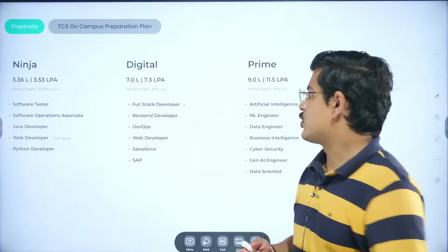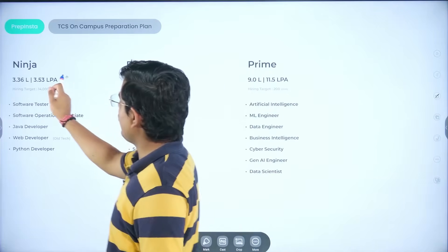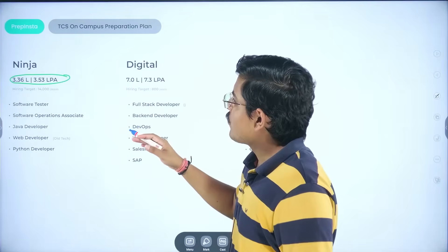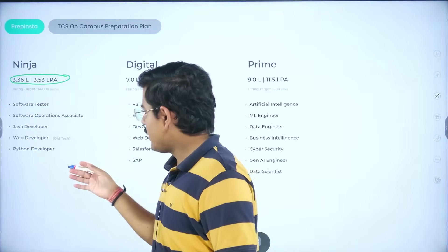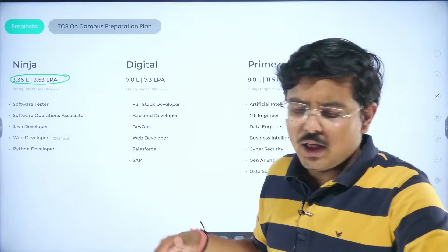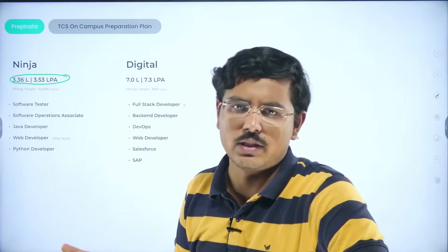TCS primarily hires in three roles: Ninja, Digital and Prime. Ninja is generally in 3.36 LPA to 3.53 LPA range. Software tester, Java developer, web developer, Python developer, software operations associate, generally those profiles which are even if you're seeing Java developer, these profiles are based on the old technologies of Java.